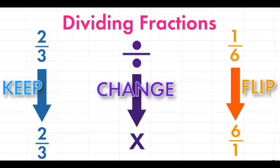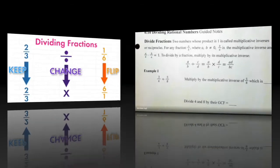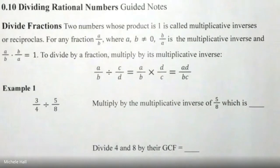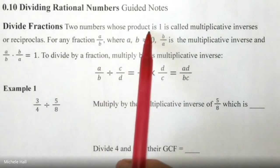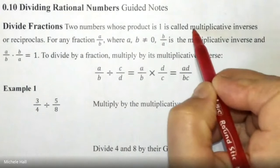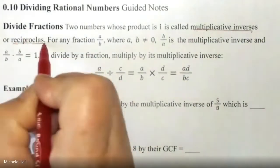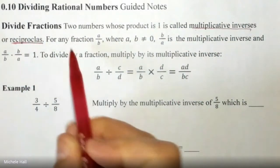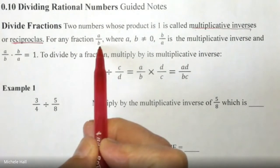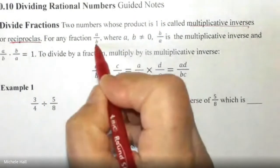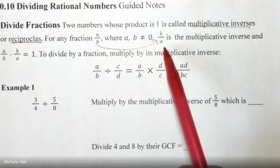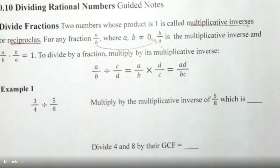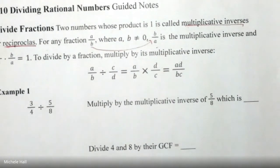Here we go on dividing fractions. We can see that the product of two numbers when the product is one, that's the multiplicative inverse or reciprocal. For any fraction a over b, the multiplicative inverse is to flip it. So if I have a over b, then the reciprocal or multiplicative inverse is b over a, and that's what we're going to be doing today.